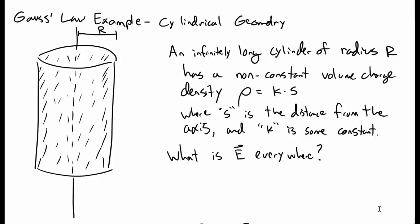Let's do another example of Gauss's Law, this time with cylindrical symmetry. We have an infinitely long cylinder of radius r, and it has a non-constant volume charge — rho is equal to k times s. So what is the electric field everywhere in this case?